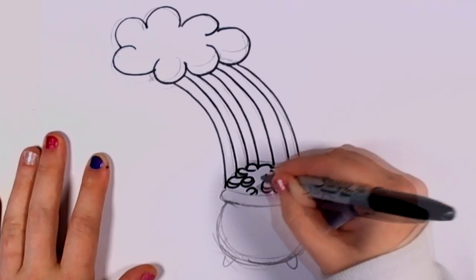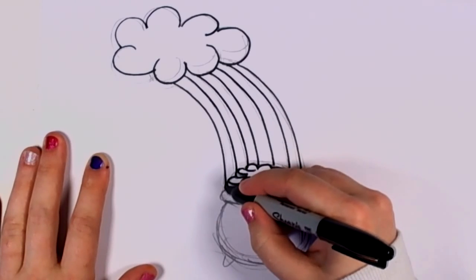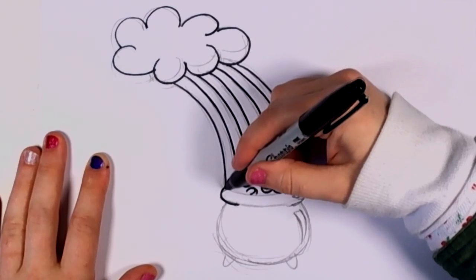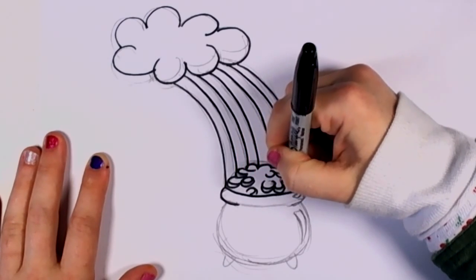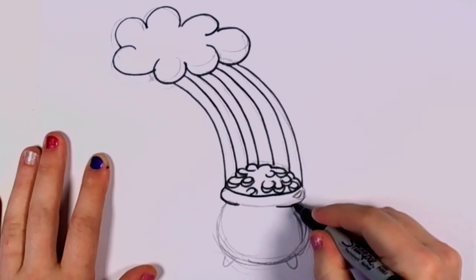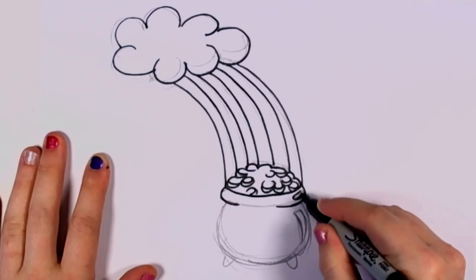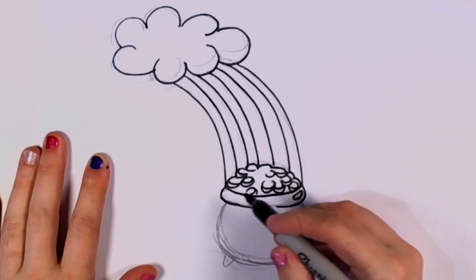And now I'm going to outline the pot or cauldron. If you want to make a witch's cauldron, you know, for Halloween, this is the same shape, same concept.